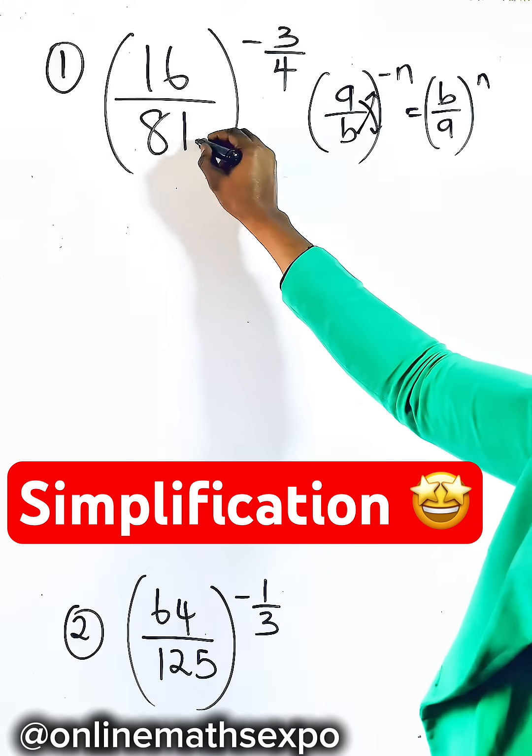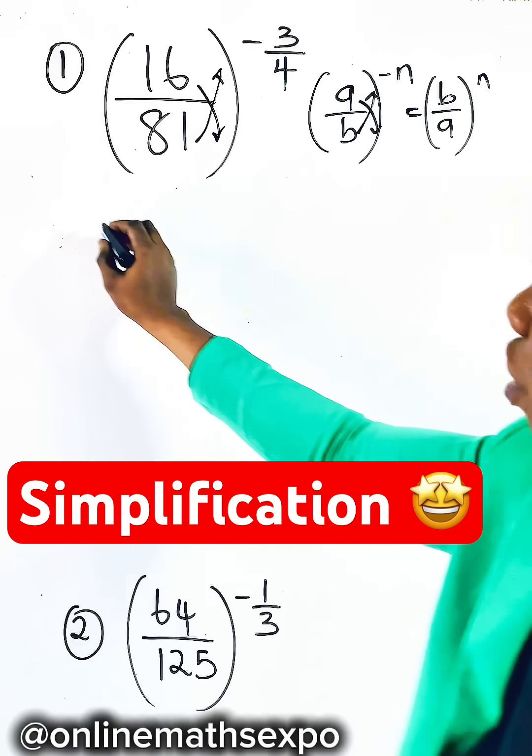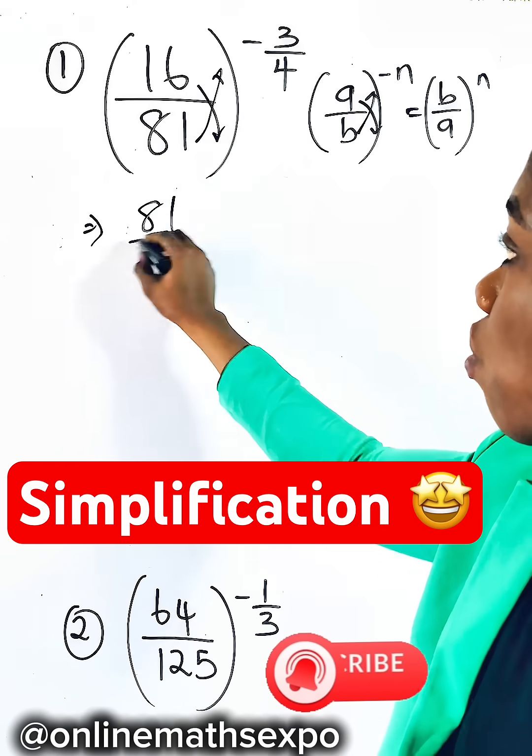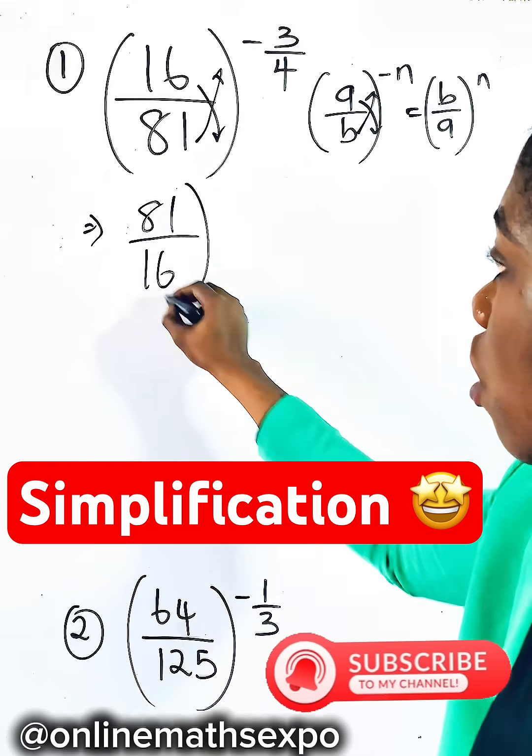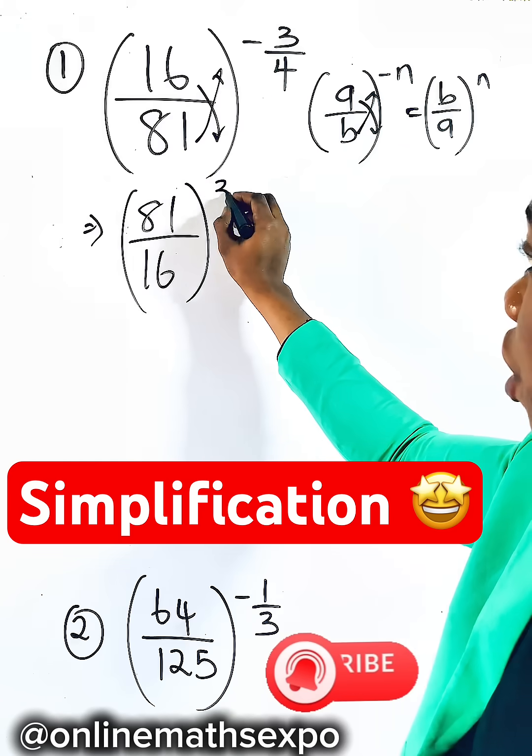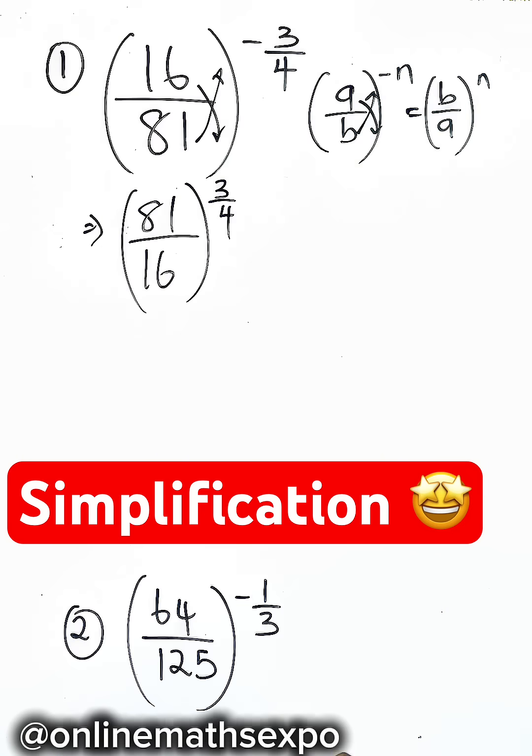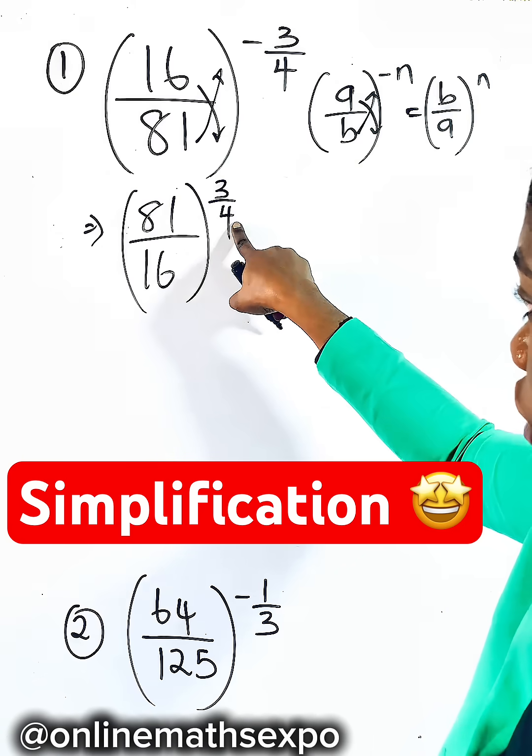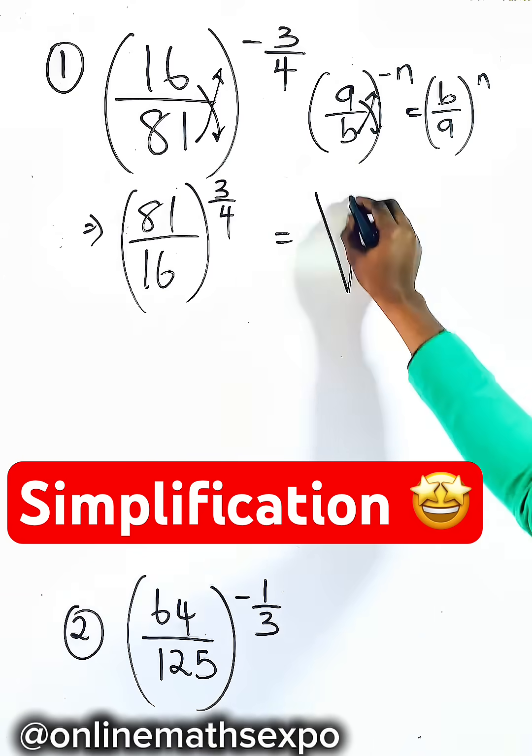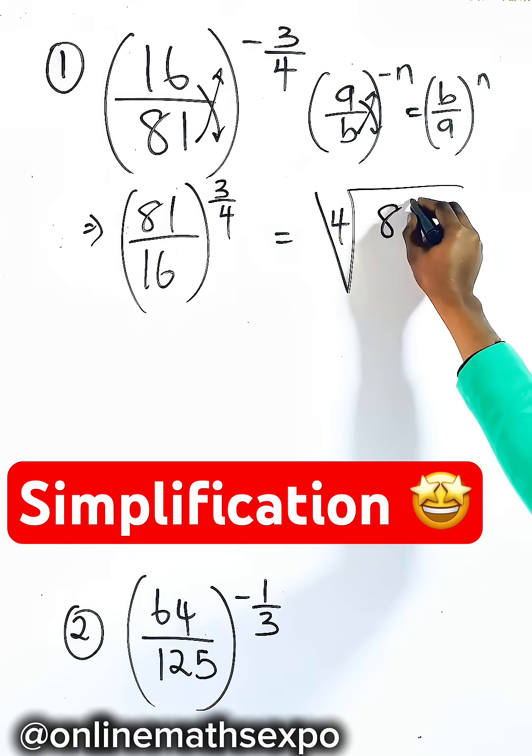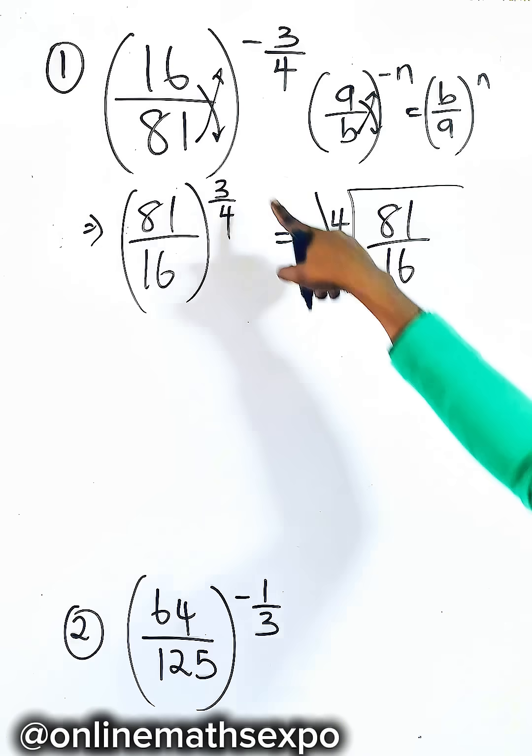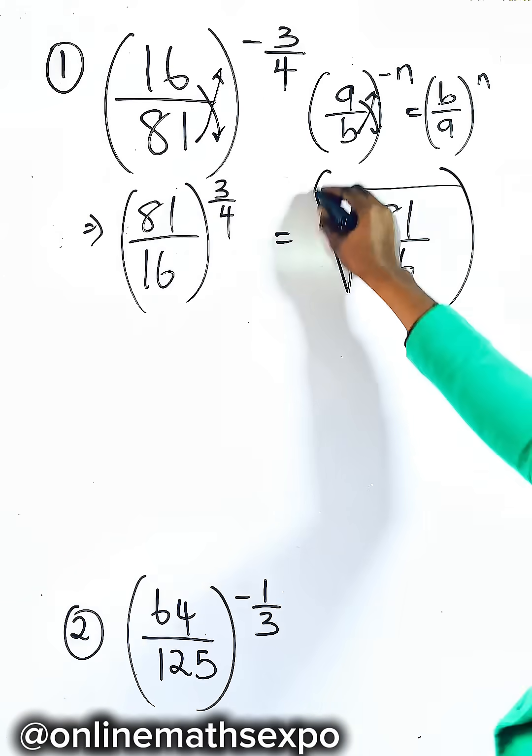So apply it here. Reverse this fraction so it's going to give us 81 divided by 16, now raised to power of 3 over 4. Now what do you do? Use this denominator to form the root, so we have fourth root of 81 divided by 16, then raise it to the power of 3.